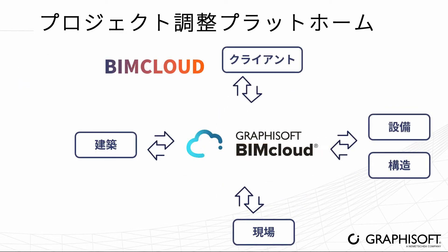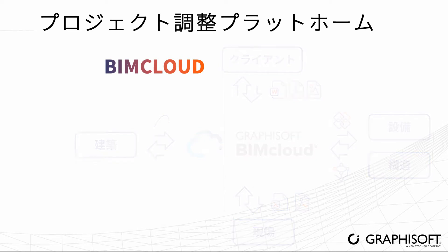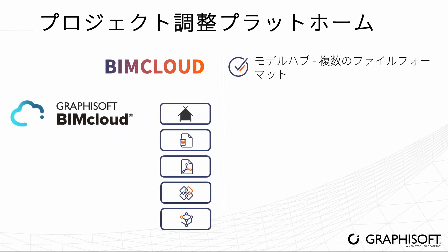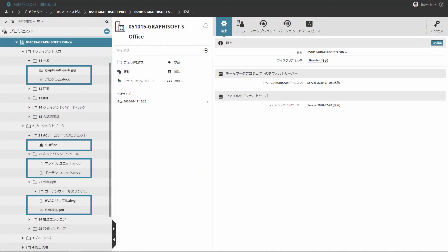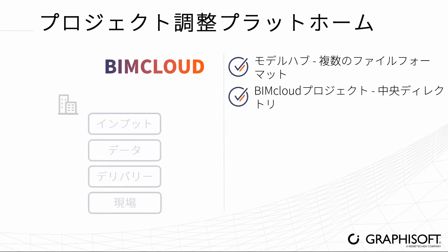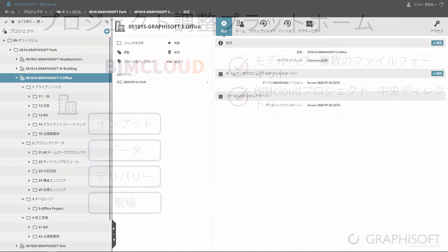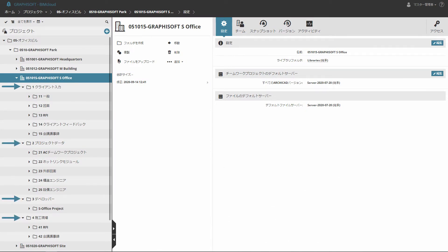Enter BIMcloud, a project coordination platform for integrating multidisciplinary design teams. As a multidisciplinary model hub, BIMcloud can host all file formats arriving from any project stakeholder. BIMcloud projects serve as a central directory for all the information and settings related to the design project.